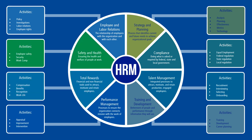Employee safety and health ensures the health and welfare of people at work. Activities include employee safety management, security, and workers' compensation. And finally, employee and labor relations — this is the relationship of employees with the organization and with each other. Activities include human resource policy communication, management and administration, workplace investigations, labor relations with organized employees, and ensuring employee rights.